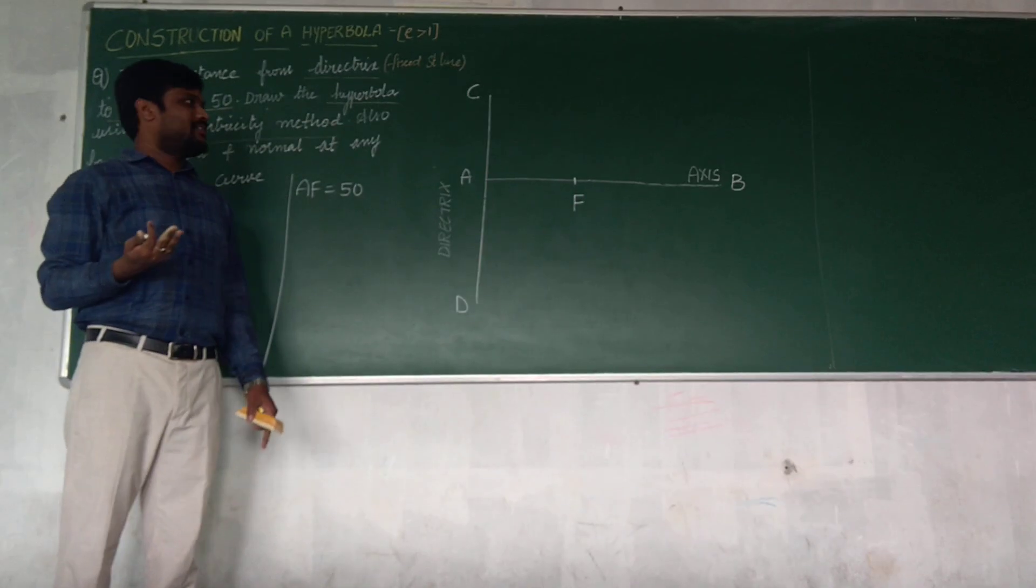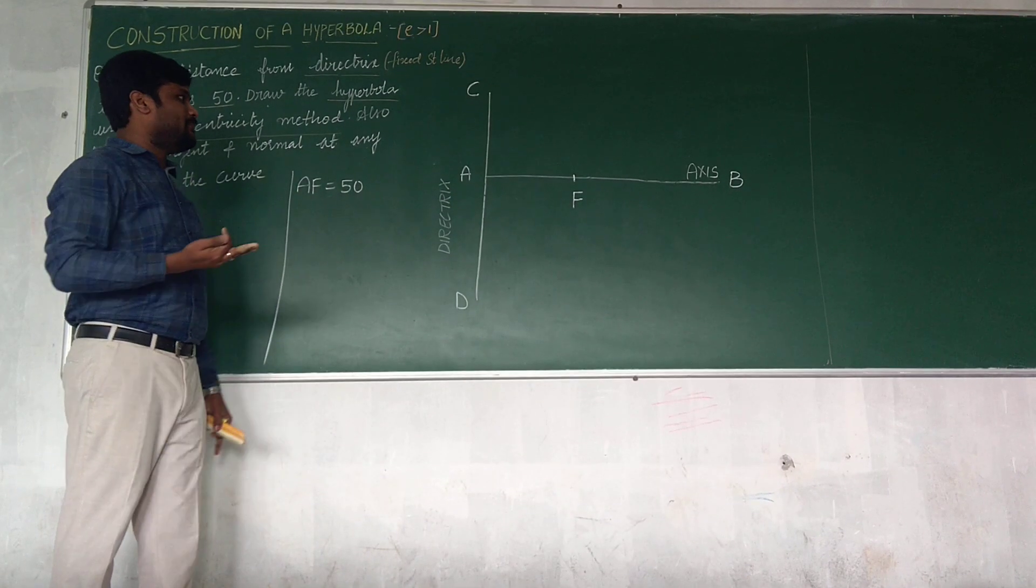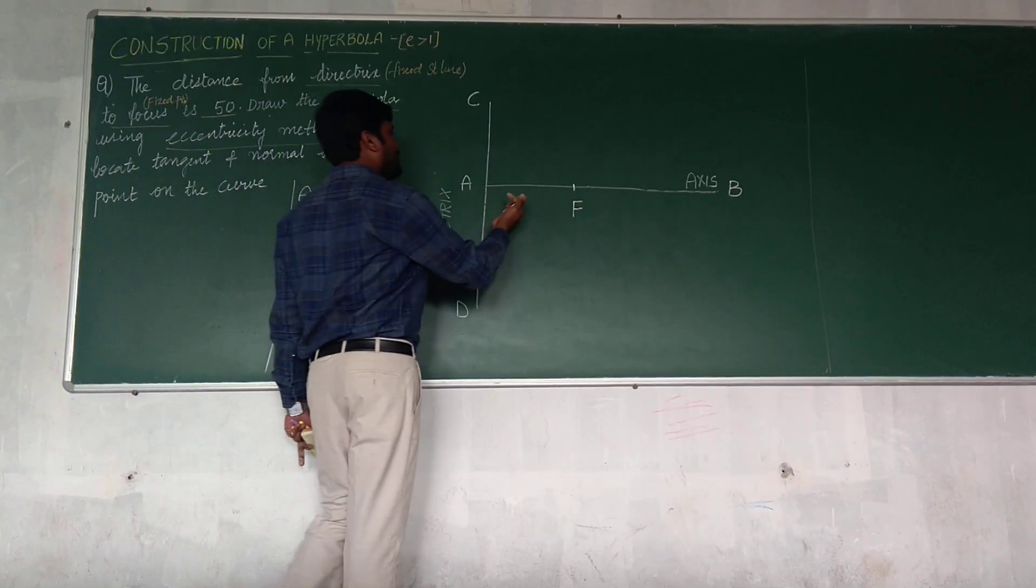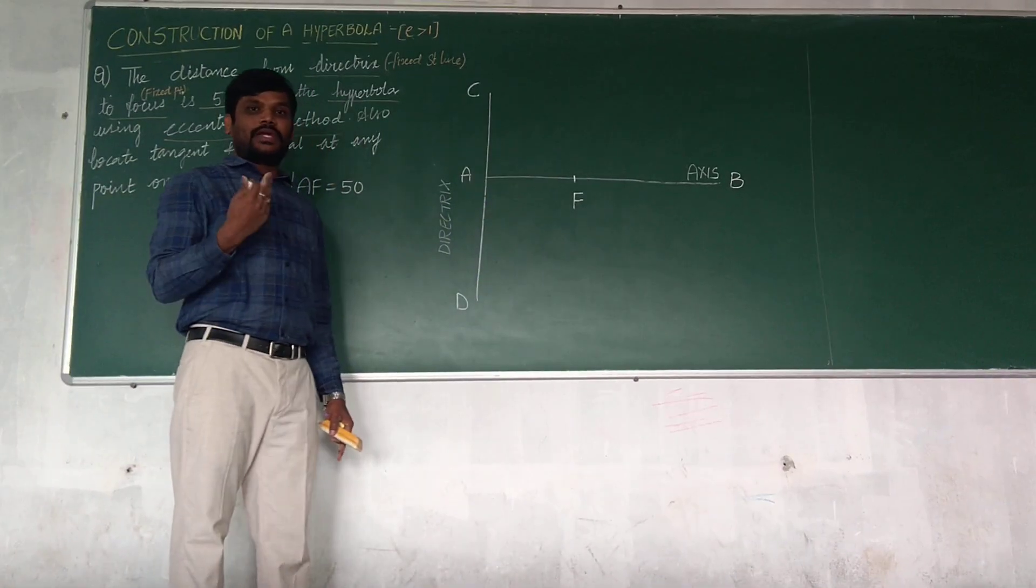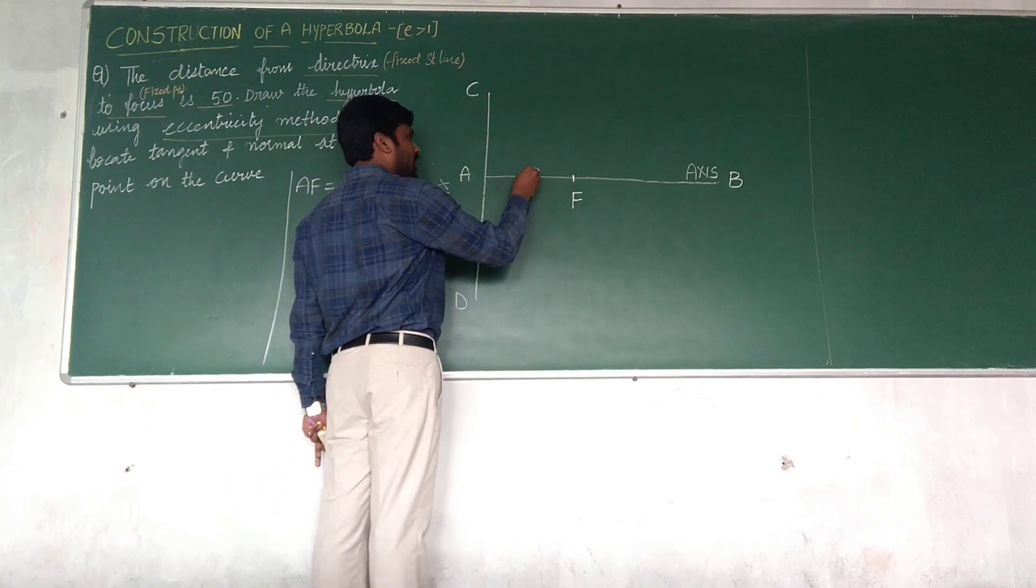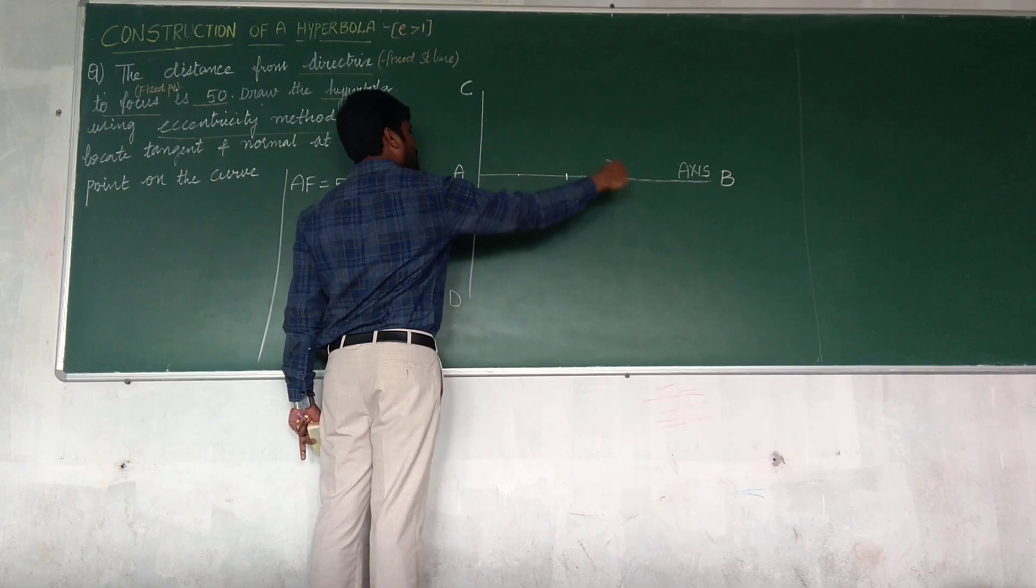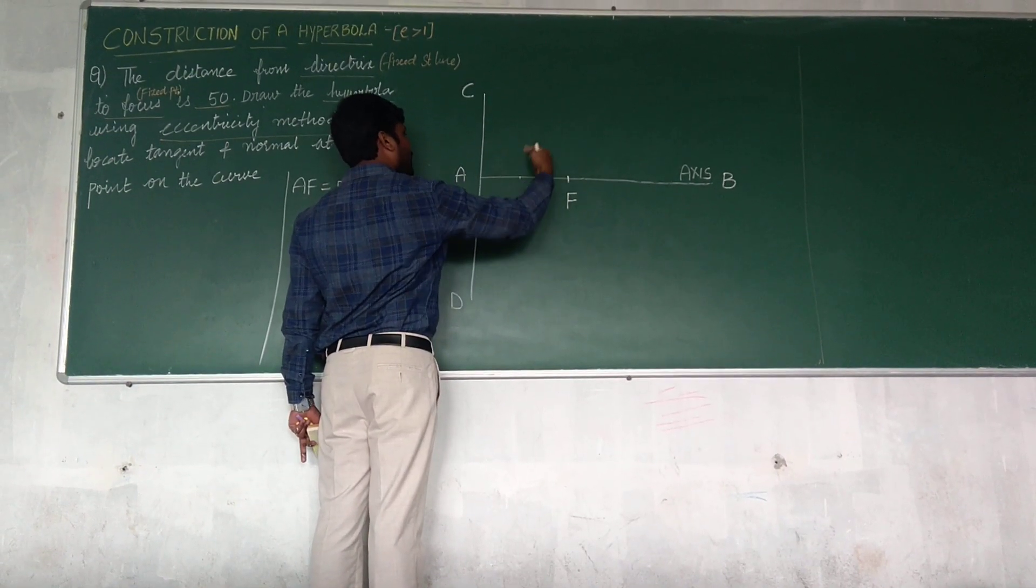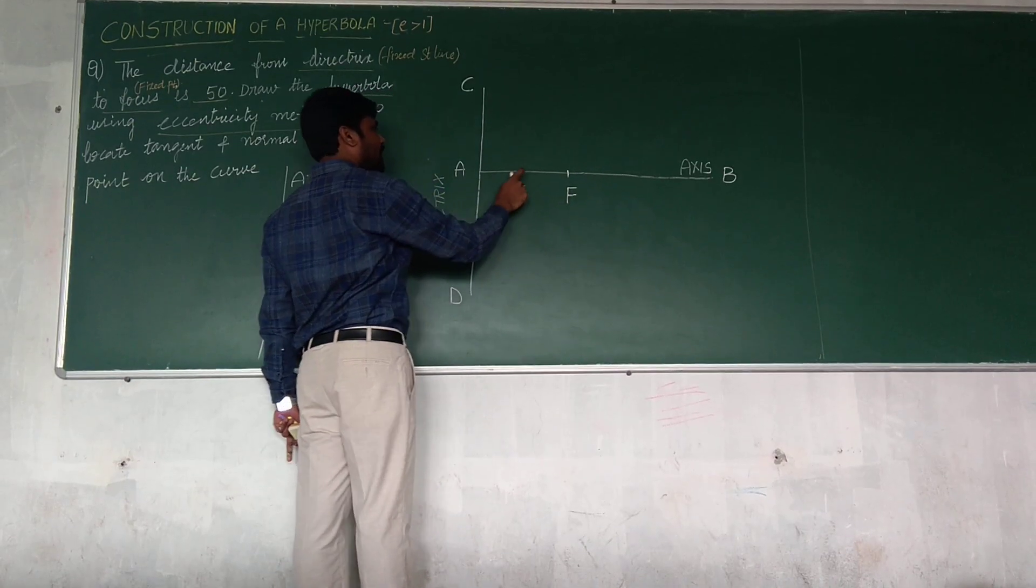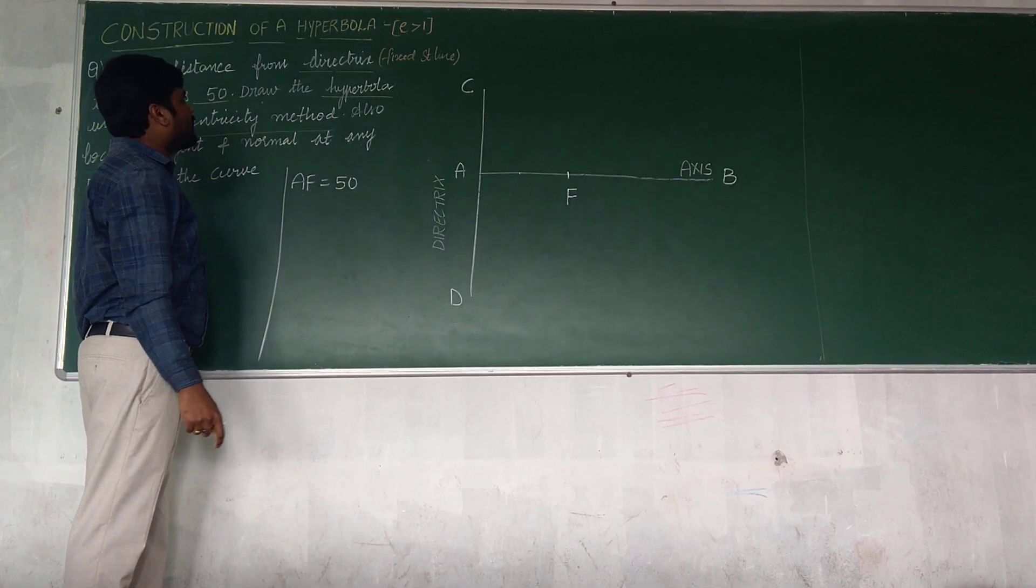That is nothing but the distance from directrix to focus is 50. What we need to do with the next point? This is similar to ellipse as well as parabola. I need to locate the vertex. Next point is to locate the vertex. Vertex is a point where the curve is passing through axis.